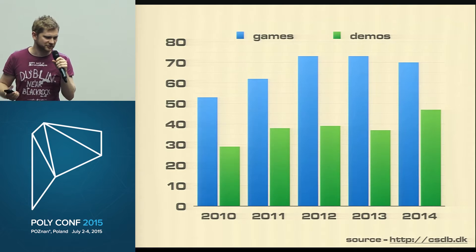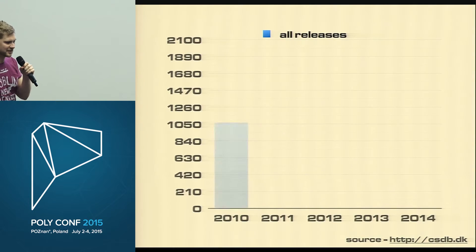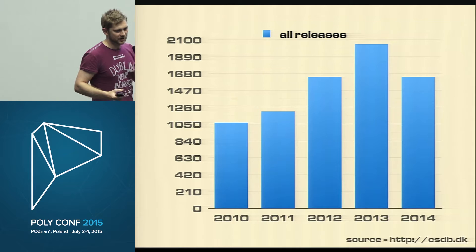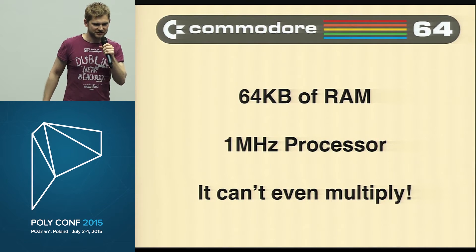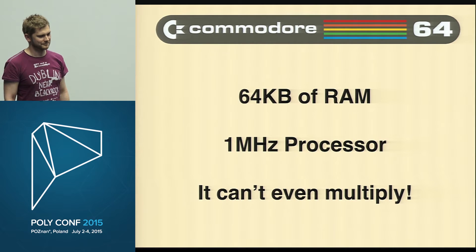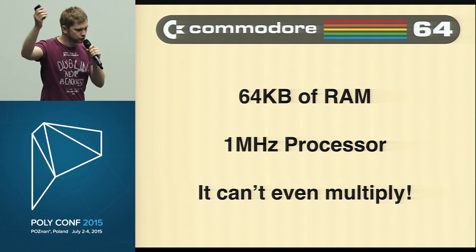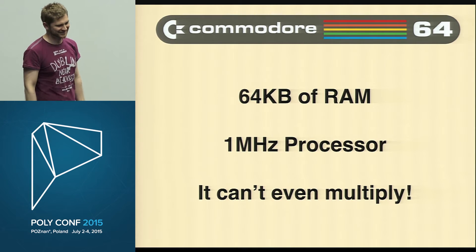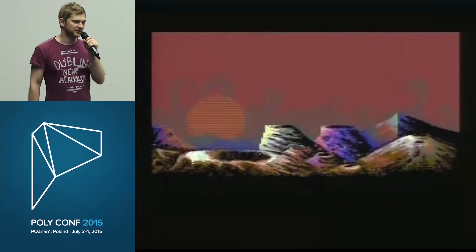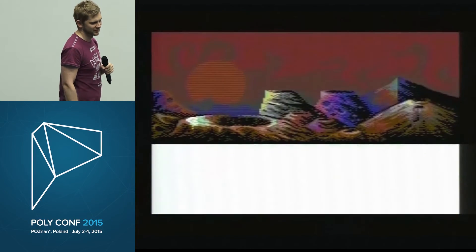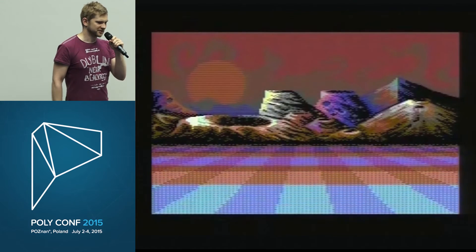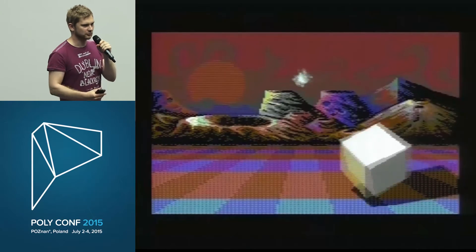It has 64 kilobytes of RAM, one megahertz processor — but it can't even multiply. There is literally no multiply command in the assembly. But people create things like that on Commodore 64. No multiplication, 64 kilobytes of RAM, one megahertz processor — like it's 16 times more than everybody would ever need.